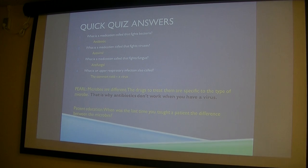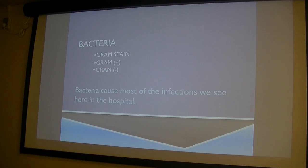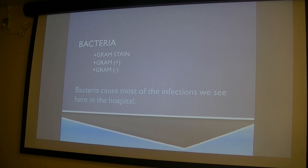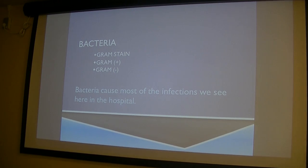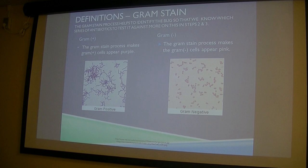Switching back to bacteria — let's talk about the bacteria we expect to see here at MHSC. We do a gram stain, which is a cool little invention. Someone discovered that some bacteria stain purple and some stain pink, and that has to do with how their outer walls are composed. The gram stain is an early-stage identification tool — results should be back within an hour.